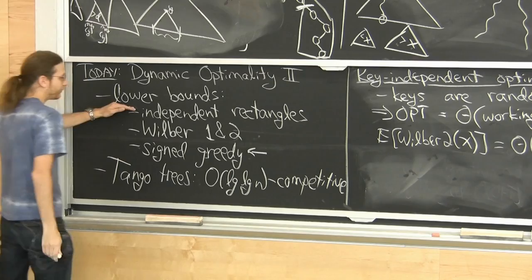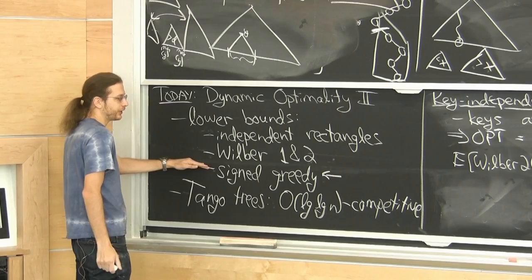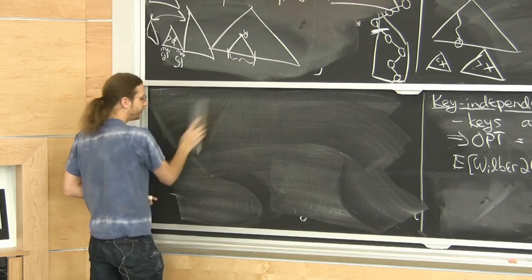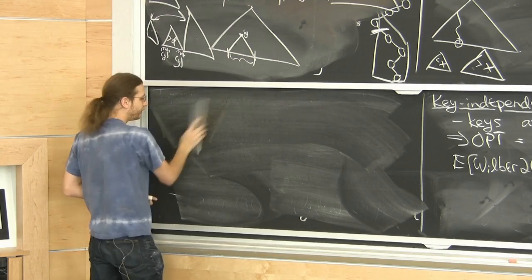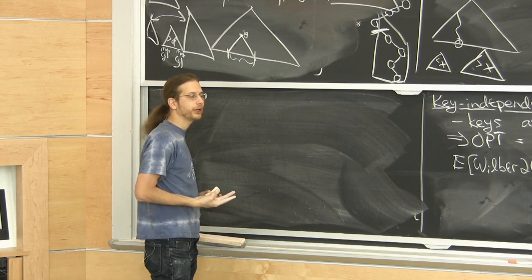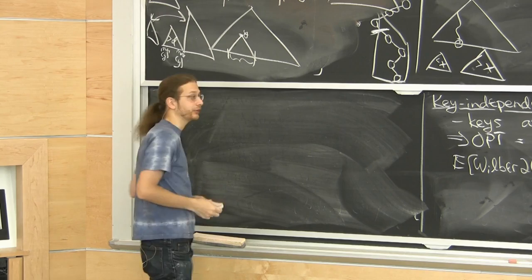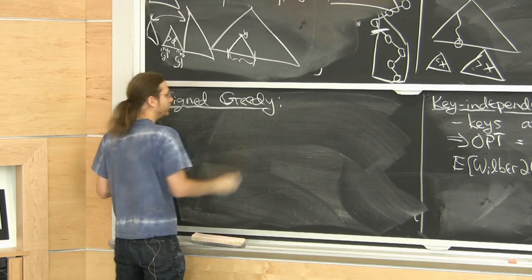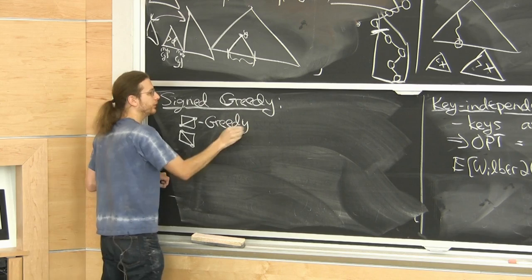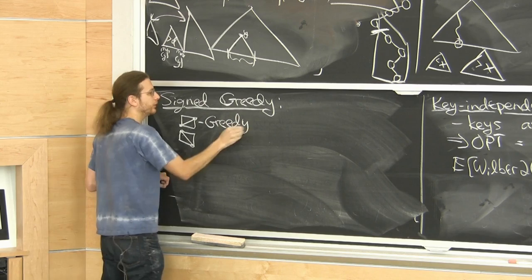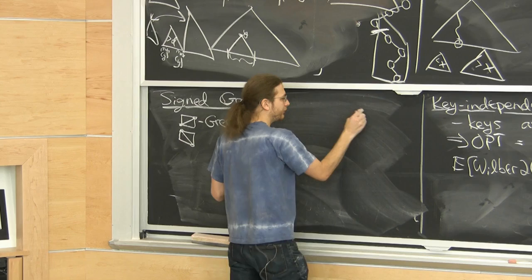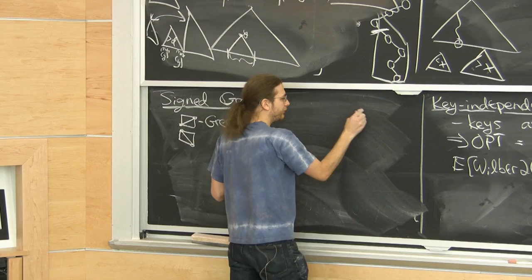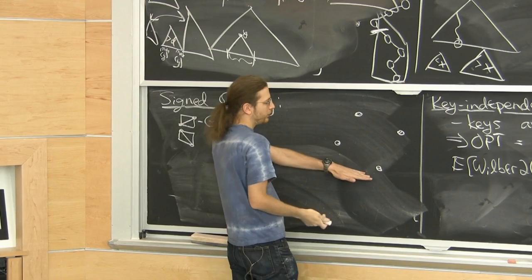One thing left on the outline is signed greedy. There are two kinds: plus signed greedy and minus signed greedy. Plus greedy works the same as the original greedy algorithm — sweep up and satisfy each unsatisfied rectangle — but you only look at plus rectangles.